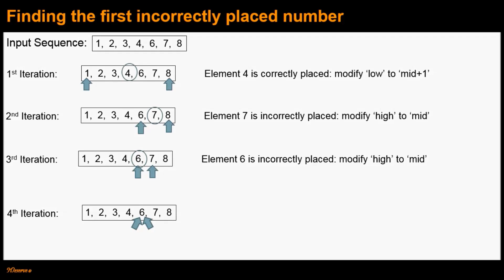The base case for this binary search is that if the array size becomes 1, meaning low equals high, we terminate the search and return that element as the first incorrectly placed number. In the fourth iteration, that is exactly the case — both low and high indices point to element 6 and the search size is 1. Therefore we terminate and say the first incorrectly placed number is element 6. Once we find this, we simply return 6 minus 1, that is 5, as the missing number.